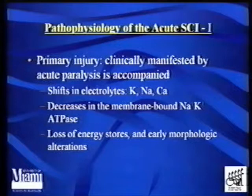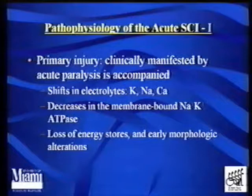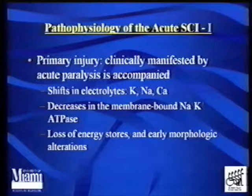If we're going to develop therapies, one of the things we would like to do is run up the usual suspects. What happens when the cord receives an impact? First, we all see the clinical manifestations of paralysis, complete or incomplete. Right now the spread in humans is slightly more incomplete injuries than complete. When you study this in the laboratory — a lot of work done by Weiss-Young — there's a lot of shift in electrolytes: potassium leaks out of the cell, sodium leaks in, calcium leaks in. You have decreases in critical enzymes in the membrane and loss of energy storage, and eventually the tissue starts dying.